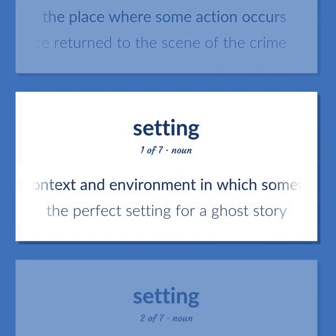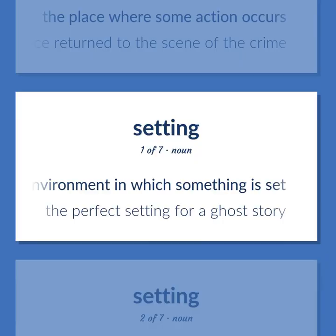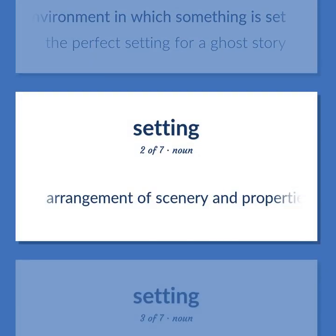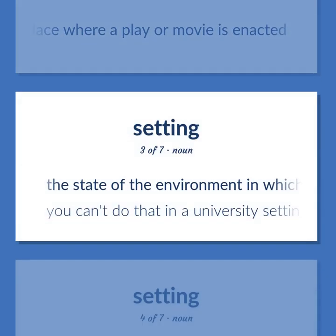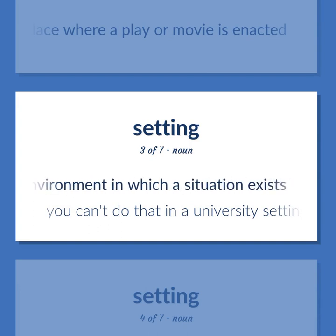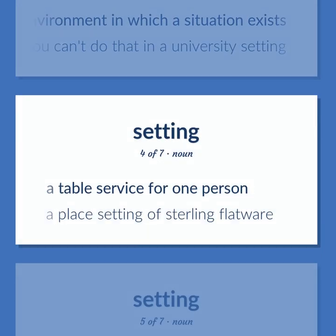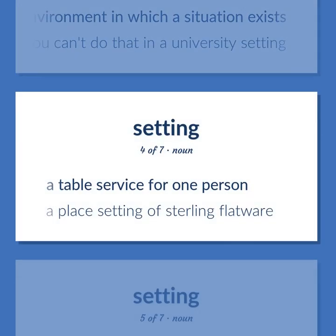Setting: The context and environment in which something is set. The perfect setting for a ghost story. Arrangement of scenery and properties to represent the place where a play or movie is enacted. The state of the environment in which a situation exists. You can't do that in a university setting. A table service for one person. A place setting of sterling flatware.